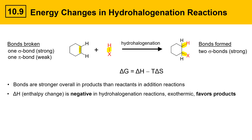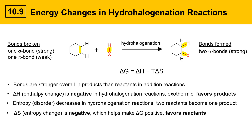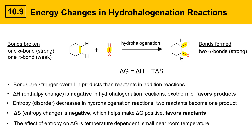Exothermic reactions tend to favor products because delta H being negative tends to make delta G negative. But we also need to look at the entropy term, delta S. Entropy or disorder decreases in hydrohalogenation reactions because two reactants are becoming one product — a net decrease in disorder with less freedom of motion in the products. Delta S being negative gets multiplied by a negative T term, making delta G more positive, which tends to favor reactants. So delta H and delta S are conflicted. Near room temperature, the effect of entropy on delta G is small, so delta G is negative and products are favored. Addition reactions tend to be favored near room temperature.